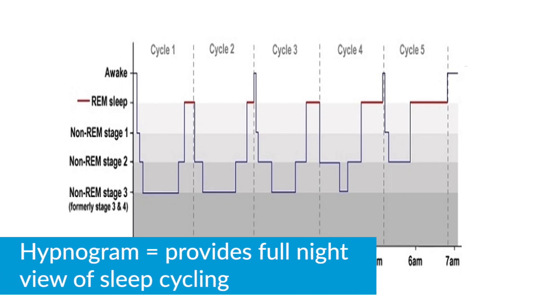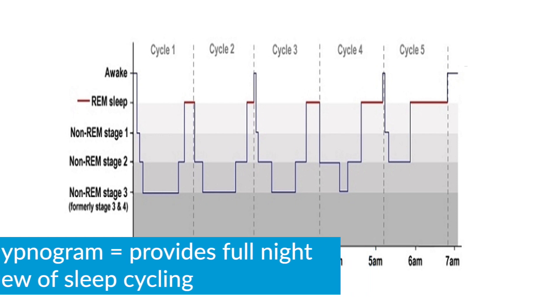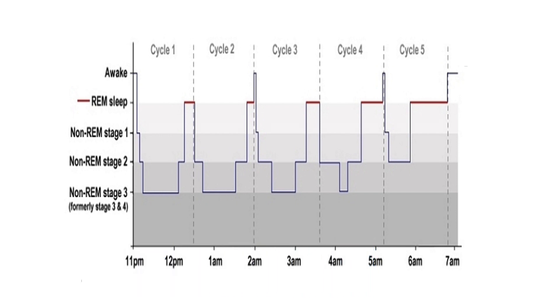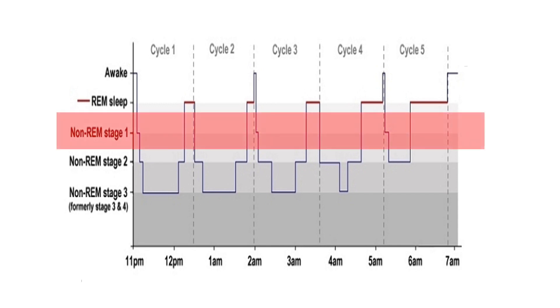To illustrate what a normal night of sleep might look like in an older child or adult that cycles every 90 to 120 minutes, we see this sleep representation called a hypnogram. A hypnogram gives a full night view of our sleep cycling. As you can see, we tend to fall asleep first into our lightest stage of sleep, N1 sleep. This is the initial transition from wakefulness to sleep.